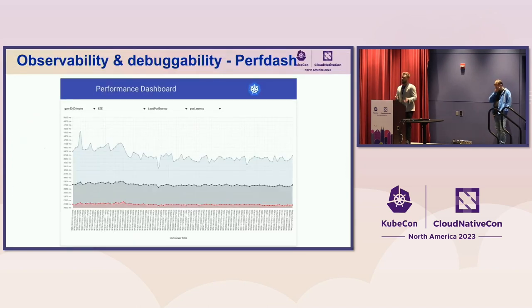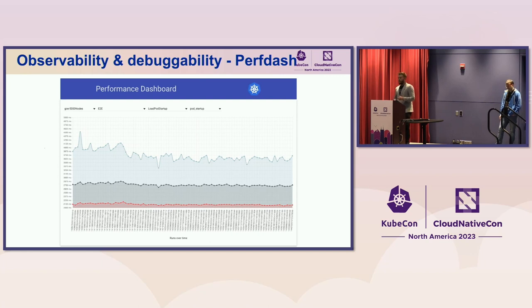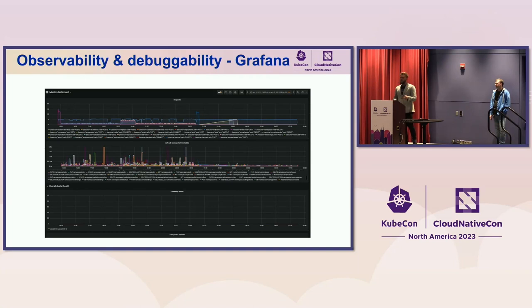Cluster Loader exports quite a lot of data about scalability SLOs. During development, we want to track how SLIs change over time. We have PerfDash, which allows us to visualize all the data from Cluster Loader 2. For example, you can see Pod Startup Latency — one of the SLOs we care about. Here you can see the 99th percentile of Pod Startup Latency that changed and actually improved over time for one of the Kubernetes releases. We also have a Grafana dashboard you can use if you're interested in debugging your run — Cluster Loader 2 exports quite a lot of Prometheus metrics, and you can plug in our Grafana dashboard to visualize what was going on during test execution.